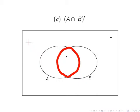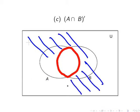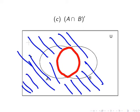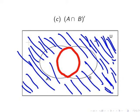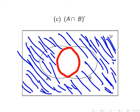It's everything inside this red area. But we're asked for the complement of this, so we're looking for everything outside of it — anything outside that red line. Anything outside that red line in the universal set corresponds to the complement of A intersection B.